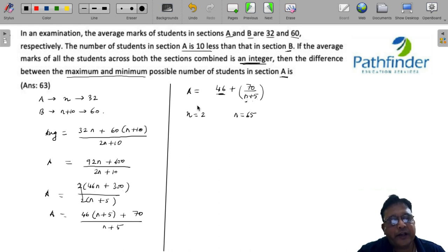In such a way you get the least and the highest value of N. So the difference between the maximum and minimum value of students is 63, which is your answer.